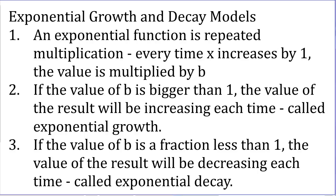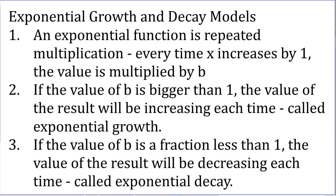Now we have two kinds of Exponential Functions: Growth and Decay. If you remember from the graphs, when the b-value was bigger than 1, we had Exponential Growth — going from left to right, we were approaching zero and getting steep. And when we set the b-value to be a fraction like one-half, it started high and decreased — that would be Exponential Decay.